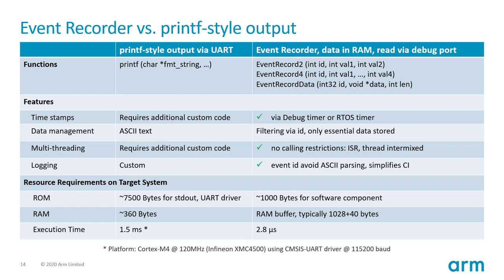Looking at resource requirements: a printf function causes significant overhead — we measured more than 7 kilobytes including the UART driver. The event recorder only needs about 1 kilobyte of program code. It needs slightly more RAM since it buffers events, but this results in much better execution time performance: 1.5 milliseconds for a printf call versus 2.8 microseconds for an event recorder call, measured on a Cortex-M4 running at just over 100 MHz.